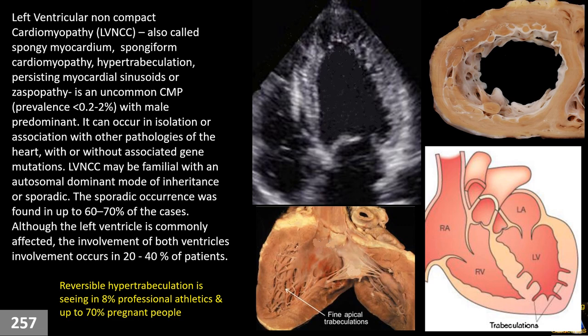Up to two decades ago, they thought this type of cardiomyopathy was very rare — they mentioned less than 0.02%. But nowadays, during the last two decades, with improvement of our diagnostic tools, especially ultrasound, ECHO, and CMR, it showed that the incidence and prevalence among pediatric patients with cardiomyopathy is about 9%, and among all echocardiography in adults is between 2-3%. It is not rare — it's actually not uncommon.